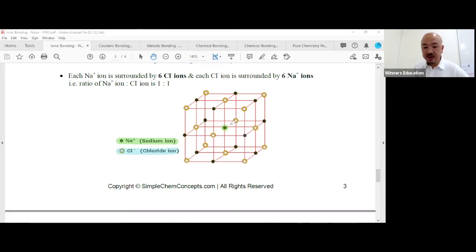Here we go. So you would take a look at what's around the green color dot in the middle, the sodium ion. There is chloride ions on the left, on the right, on top, below, in front and behind. It's three dimensions.